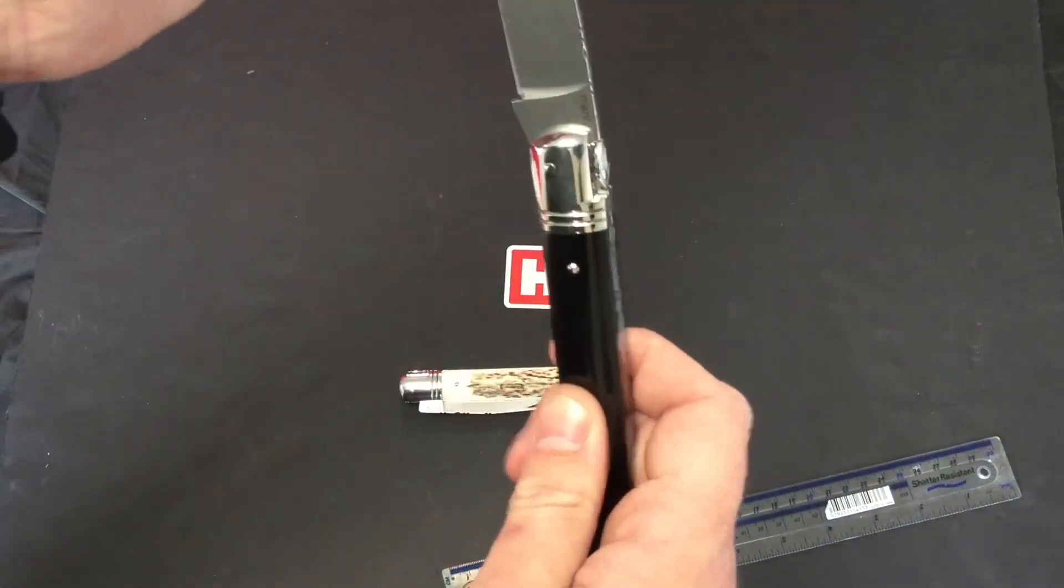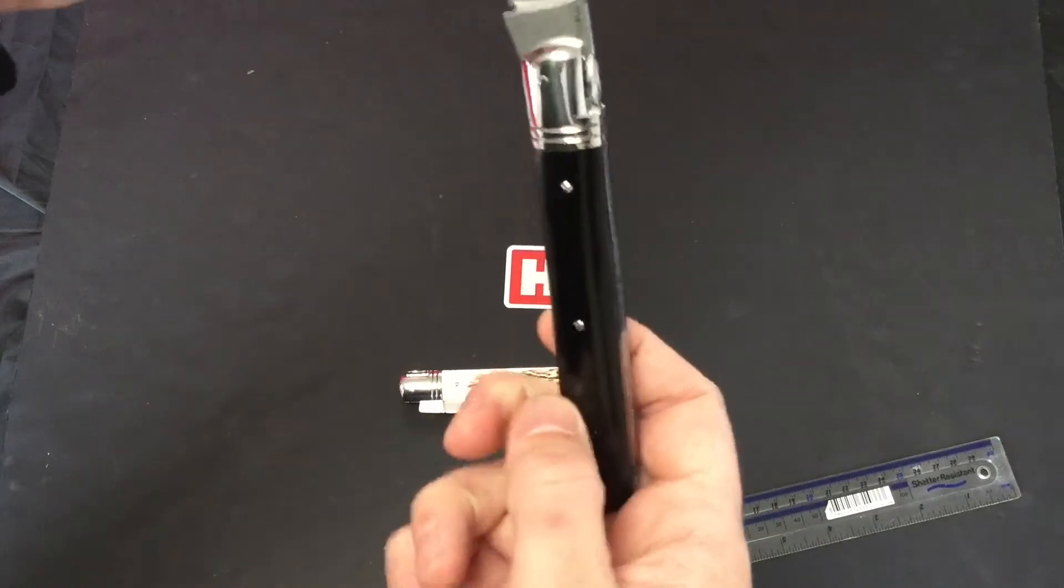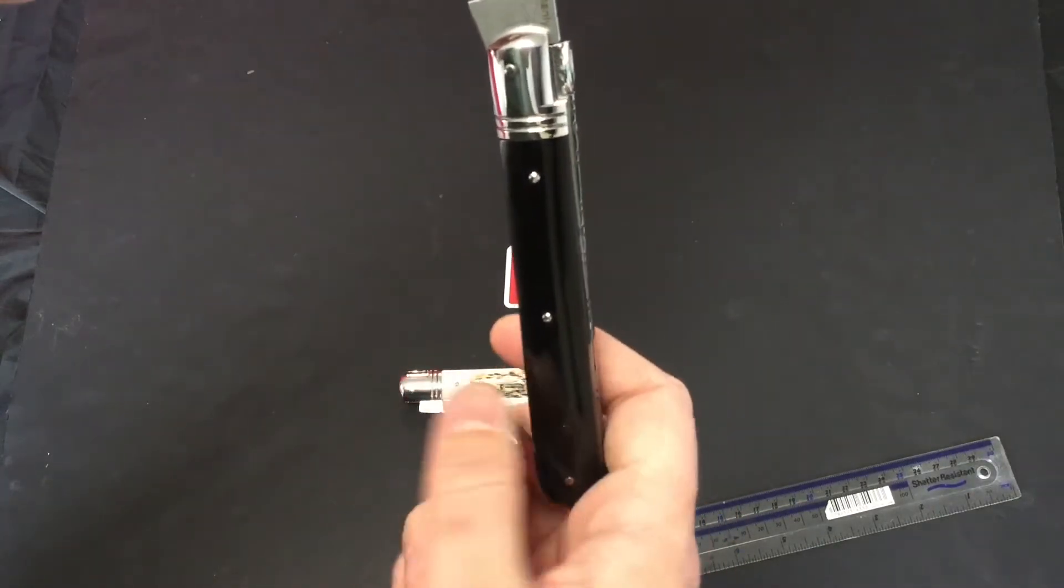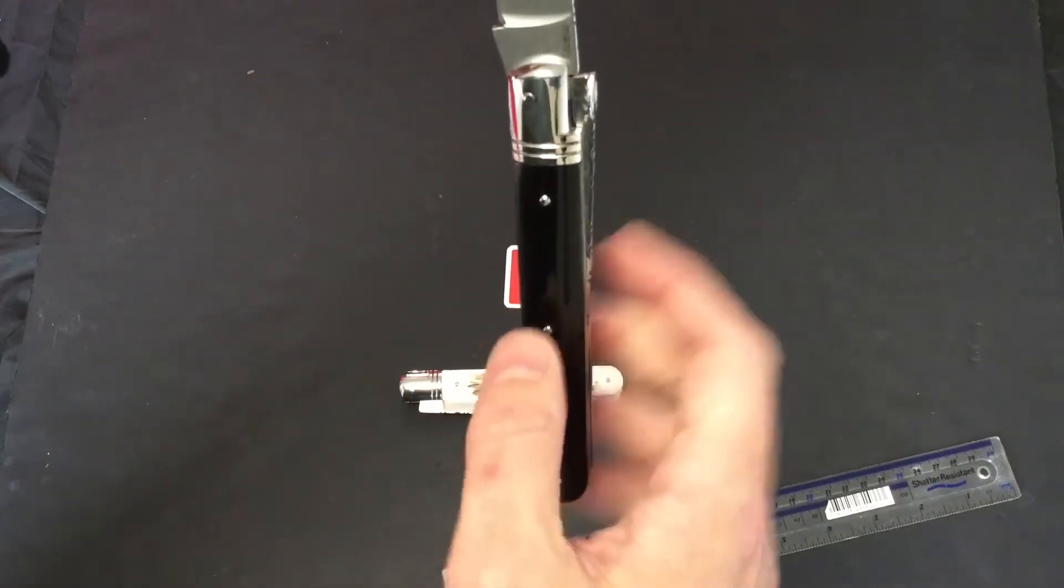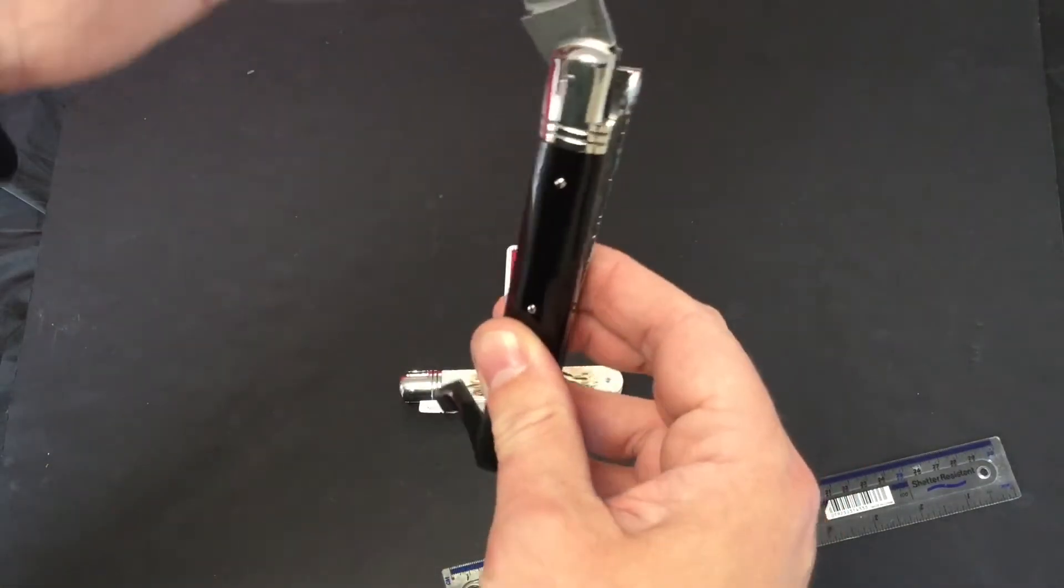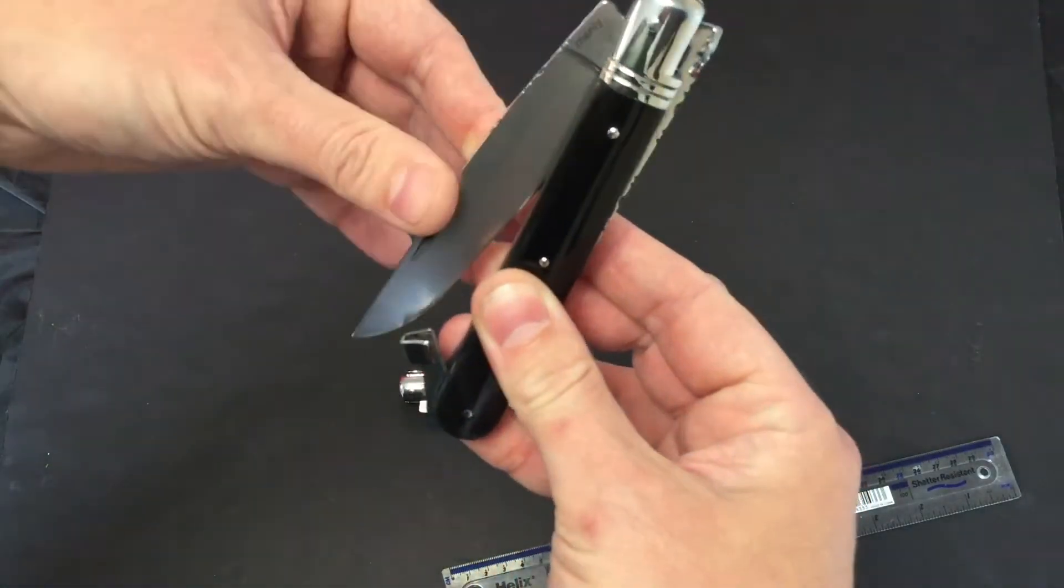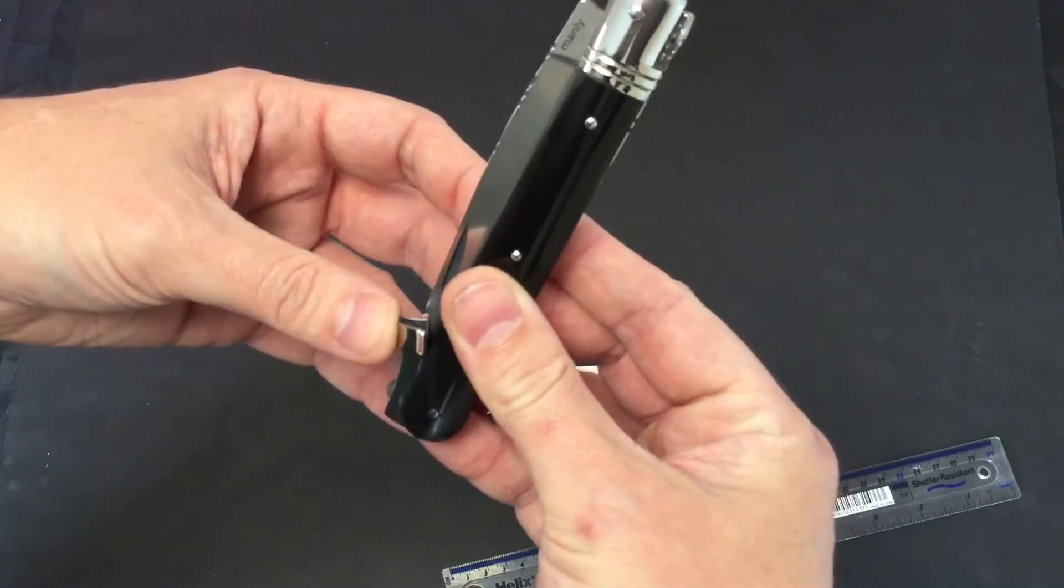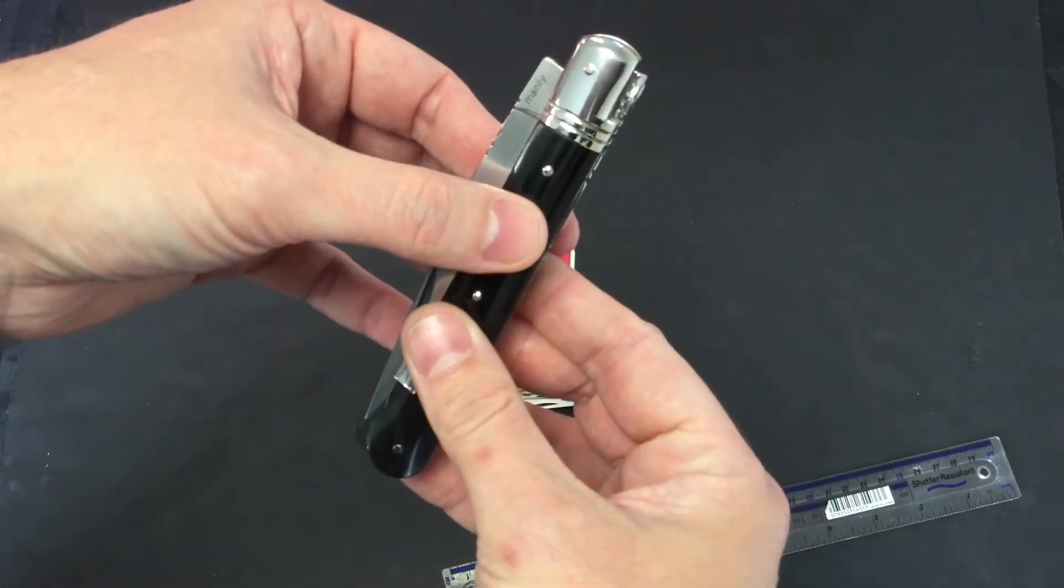Pull it out. As we pull it, you can see the back lock going up and down. So as the back lock is released, we can close that and snap it shut so it's securely locked.